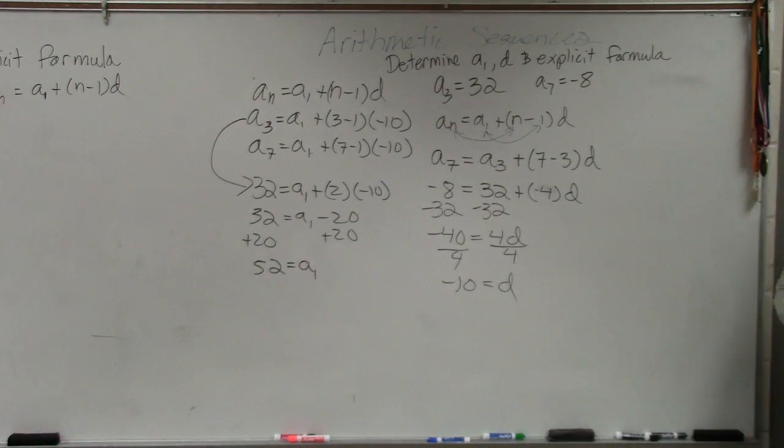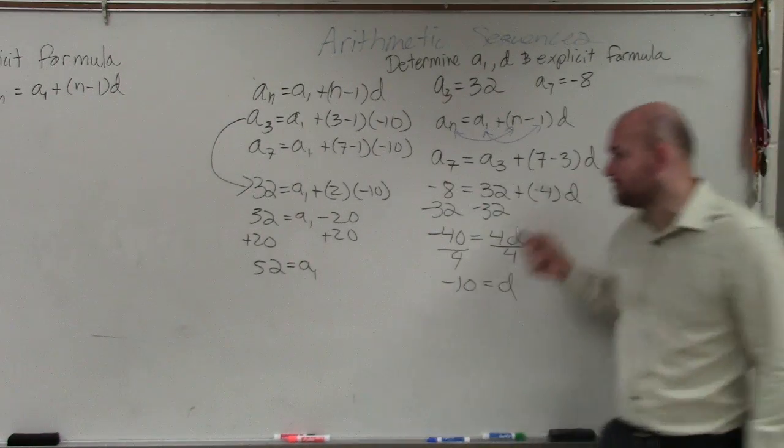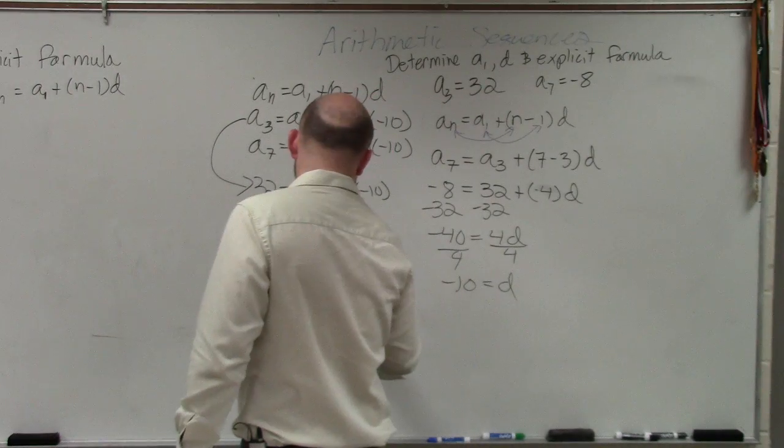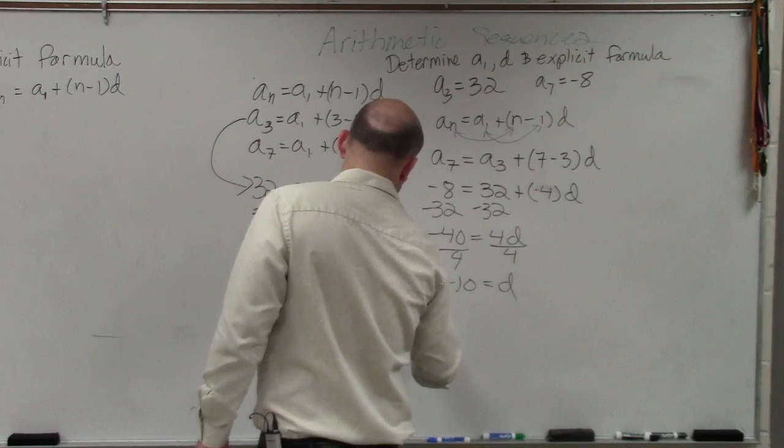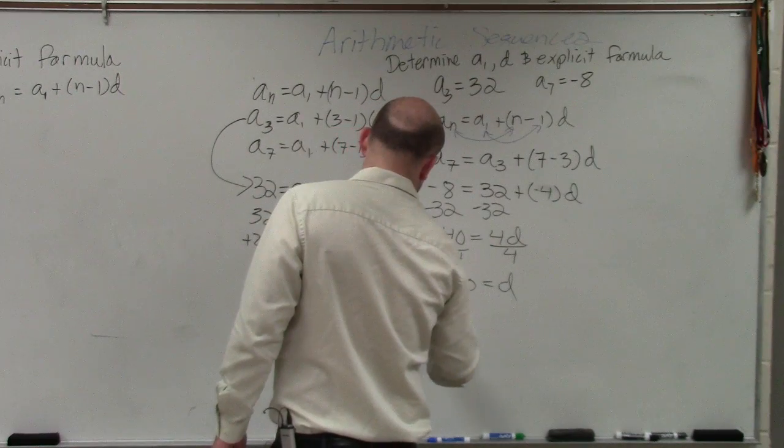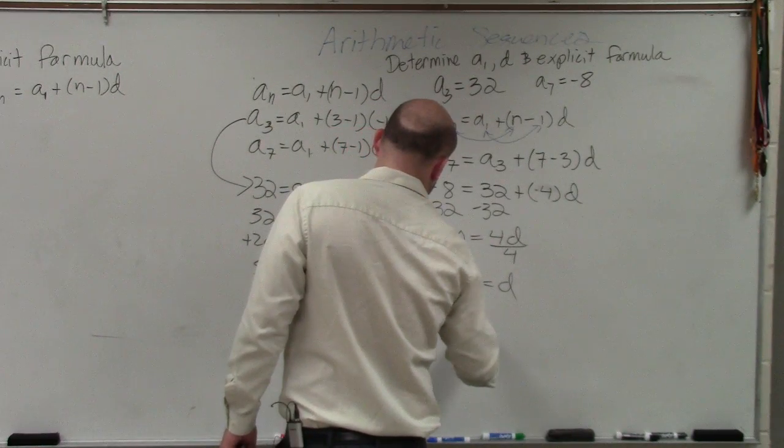And now that I know what a sub 1 is, I can write the explicit formula where it says a sub n equals a sub 1, which is 52, plus n minus 1 times negative 10.